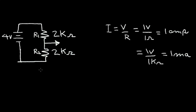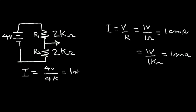We know from previous videos that resistors in series add, so the total equivalent resistance of R1 and R2 is the sum of this 2k resistor and this other 2k resistor, giving us an equivalent resistance of four thousand ohms. We can calculate the current in this circuit: current equals voltage divided by resistance, so we have four volts divided by the equivalent resistance of 4k ohms, which equals one milliamp of current flow.